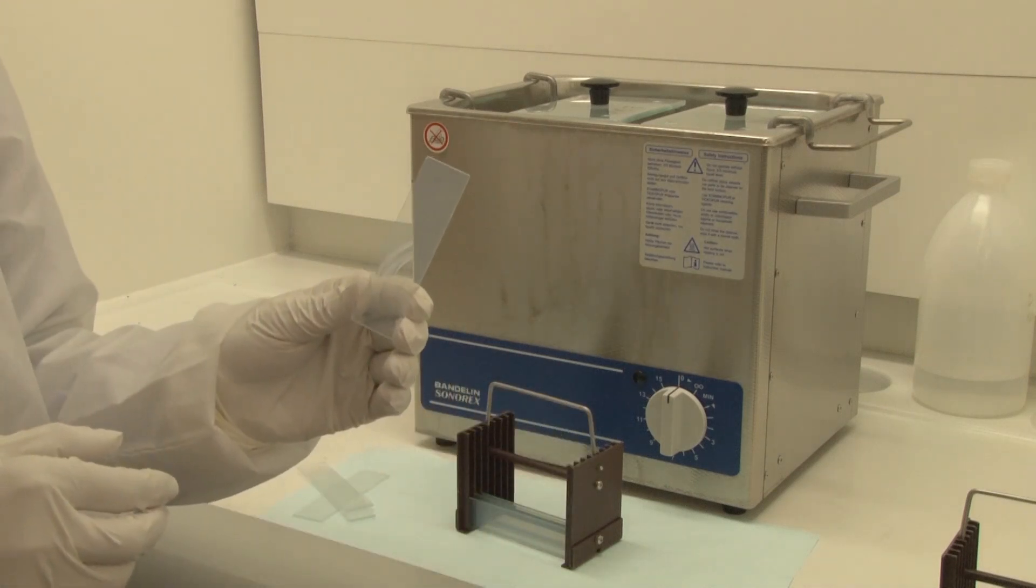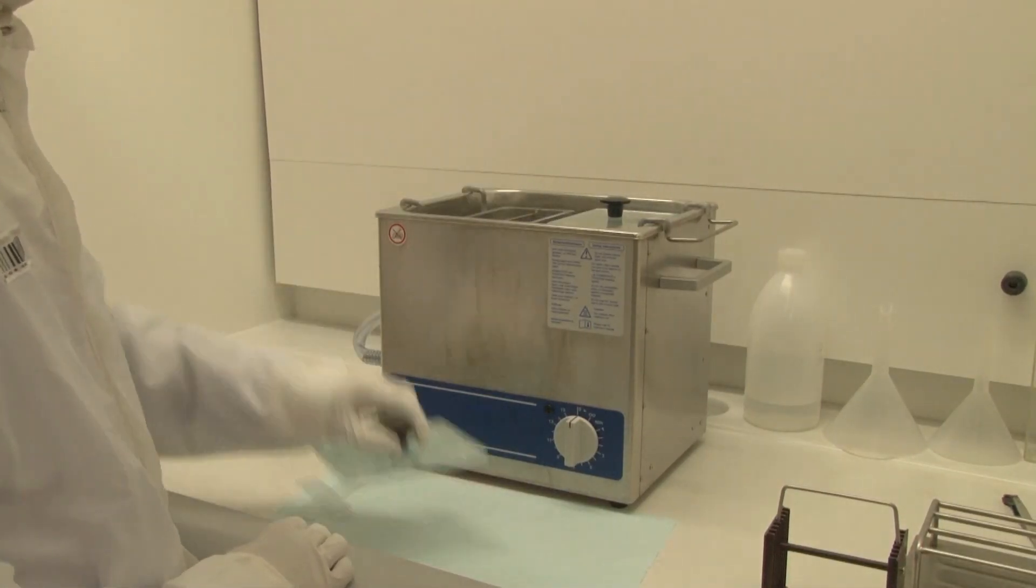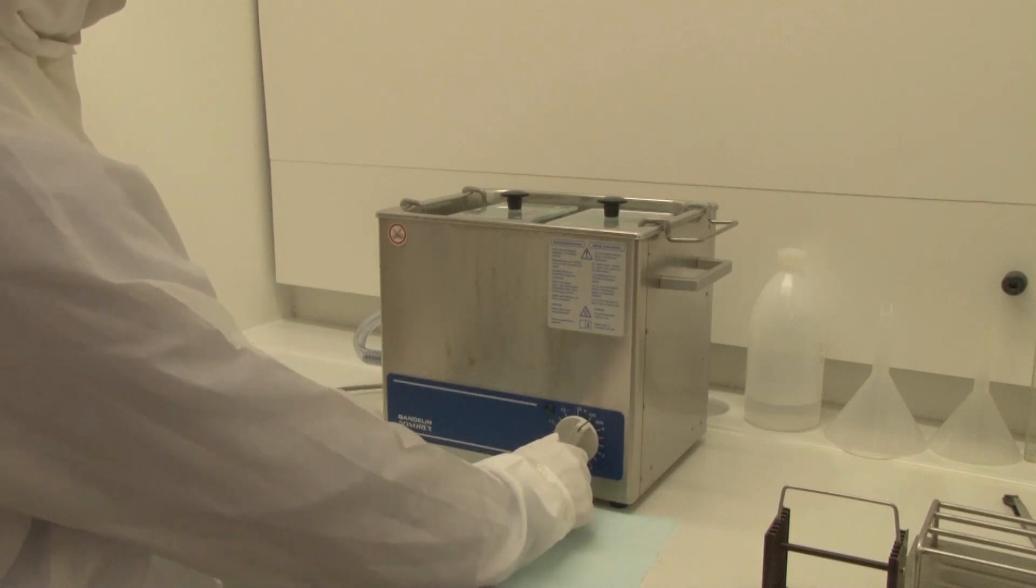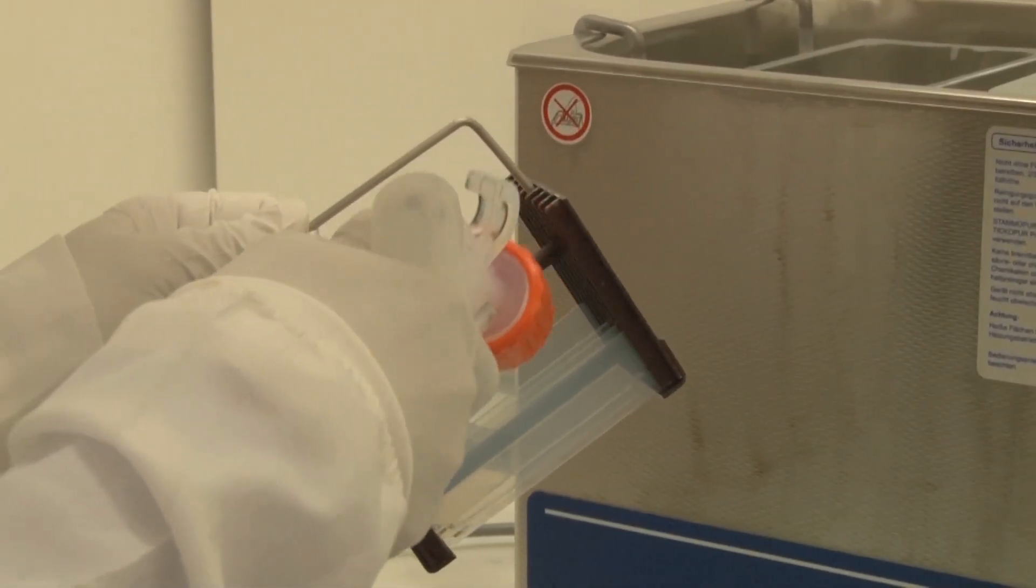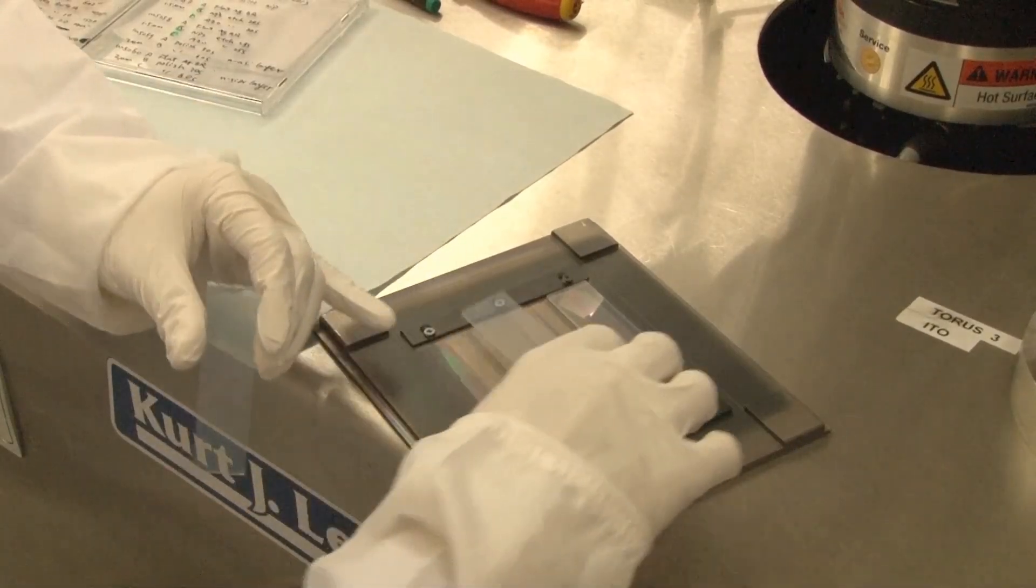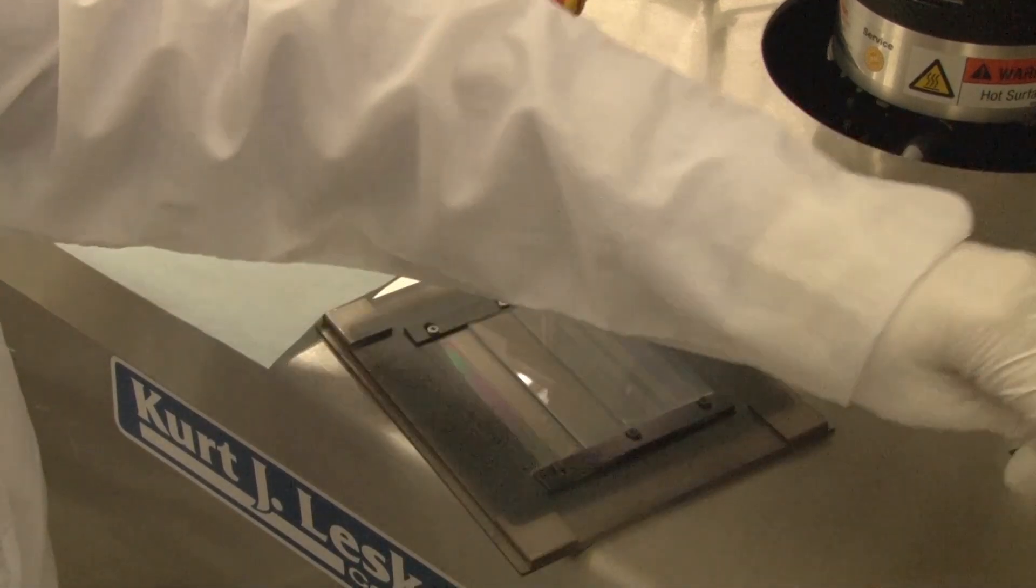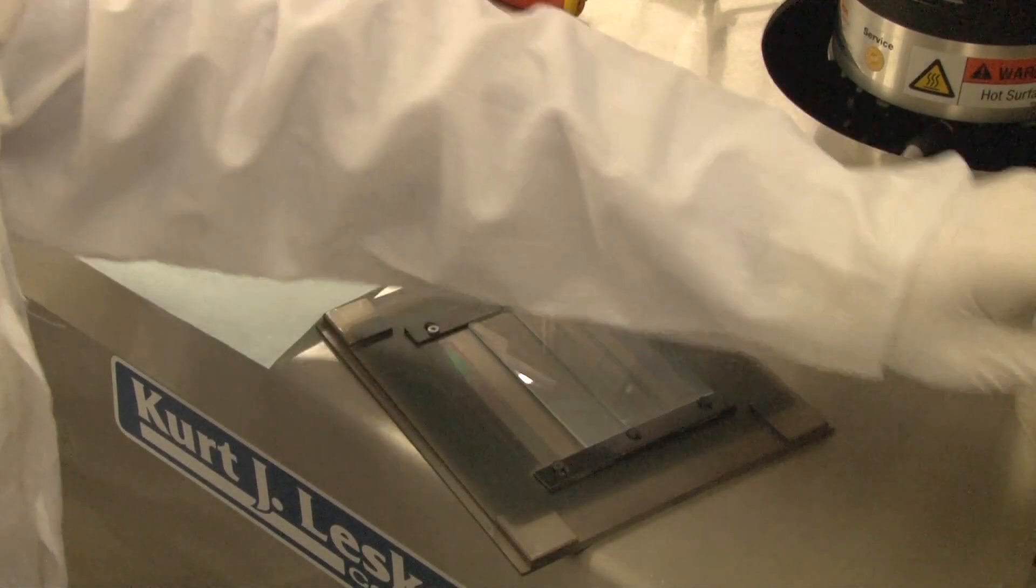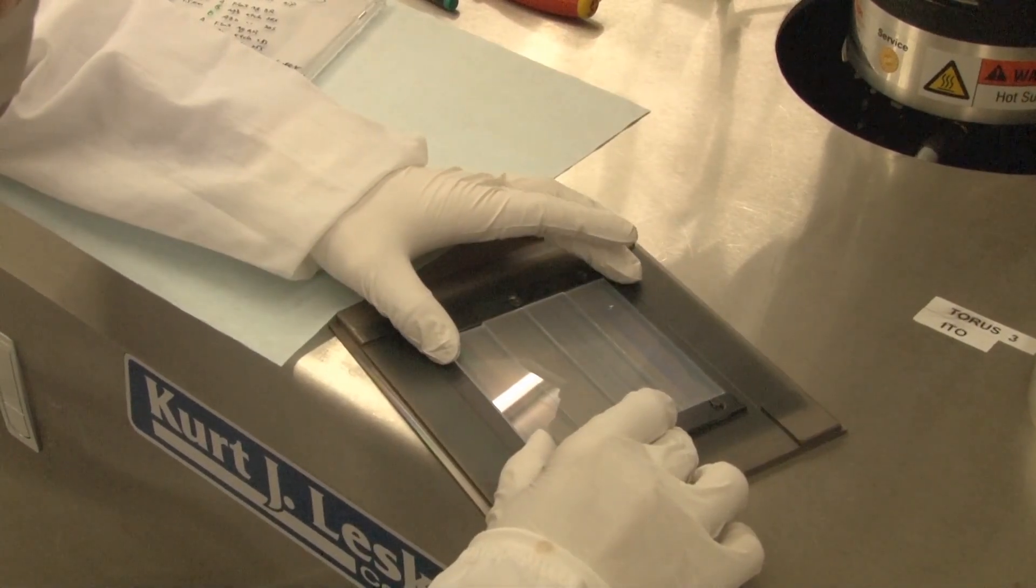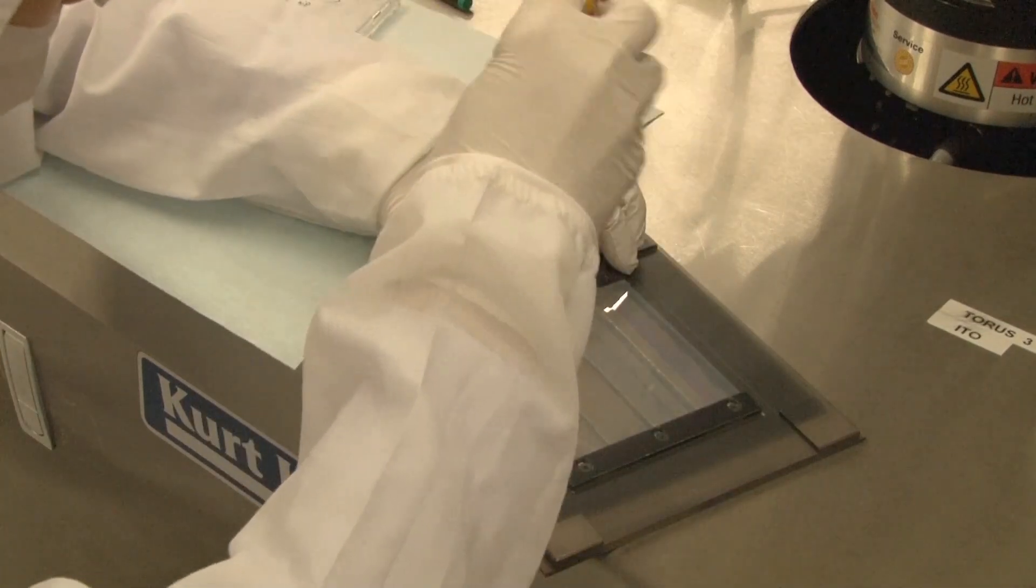Before deposition, the samples have to be cleaned in a so-called ultrasonic cleaning bath. The potential dirt and dust particles are removed. Since the solar cell device is only several hundreds of nanometers up to a few microns thick, a dust particle on the substrate will generate a shunt between the front and back contact in the final solar cell. Here we use a substrate that is coming from the Japanese Asahi Glass Company and already has a TCO coating on it. The TCO coating is a fluorine-doped tin oxide and is responsible for the hazy color.